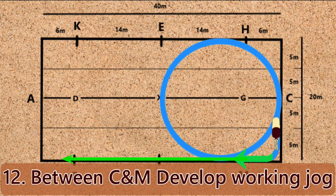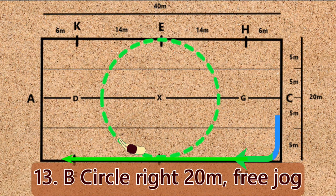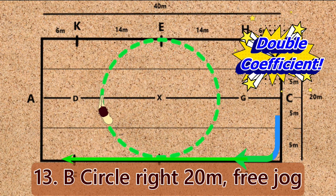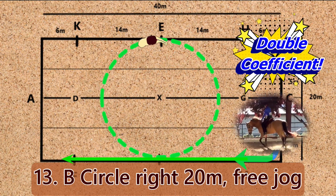Movement 12: Between C and M, develop working jog. Movement 13: B, circle right 20 meters free jog.